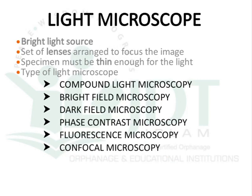Coming to the light microscope — even though it is not in our syllabus, it is the basic structure of a microscope. After knowing the basic structure of a light microscope, it will be easy to understand the modifications in dark field, bright field, and phase contrast microscopes, so we must study the basics of light microscopy. In a light microscope, the source is bright light, a set of lenses are arranged to focus images, and the specimen must be as thin as possible. Types include compound, bright field, dark field, phase contrast, fluorescence, and confocal microscope.